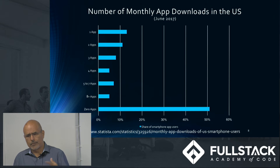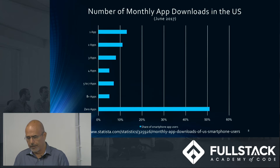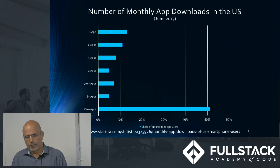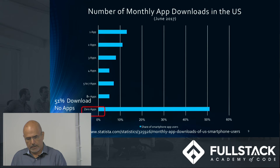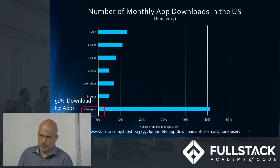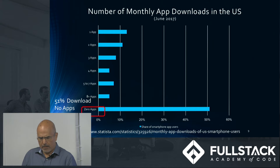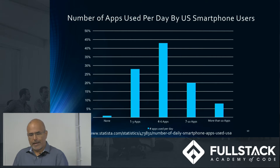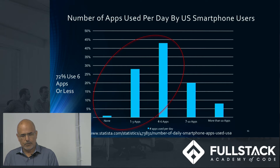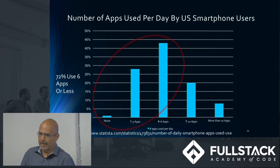The next four slides show stats of smartphone use that are giving us an environment where bots are going to be developed very quickly and grow exponentially. For example, this shows the number of monthly apps downloaded in the US. Note that 51% of smartphone users don't download any apps — they just work with the apps they already have on their phones. This other chart shows the number of apps used per day: about 72% of users use six apps or less. How does that compare with what you use? Think about it.